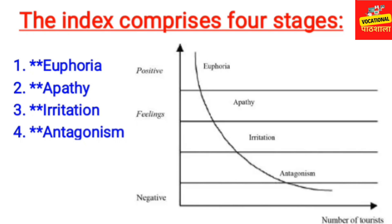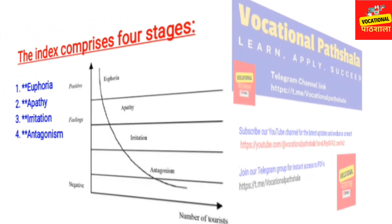The four stages of the Irritation Index are: first, Euphoria; second, Apathy; third, Irritation; and fourth, Antagonism. On the chart, one axis shows negative to positive feeling, and the other shows number of tourists. In Euphoria, the feeling of the local community is positive. In Apathy it becomes slightly negative, in Irritation more negative, and in Antagonism very negative.